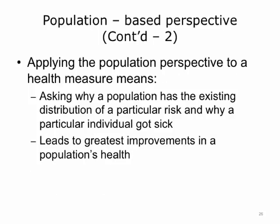Applying the population-based perspective to a health measure means asking why a population has the existing distribution of a particular risk, in addition to asking why a particular individual got sick in the first place. This perspective takes into account determinants of health, which include where the person is living, what their environment is like, cultural factors, socioeconomic factors — for example, financial status and crime in one's neighborhood.